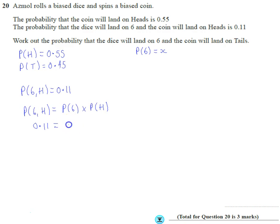The probability of getting a 6 we don't know is x. The probability of getting a head is 0.55. So we need to rearrange this. So I'm going to divide this answer by 0.55.